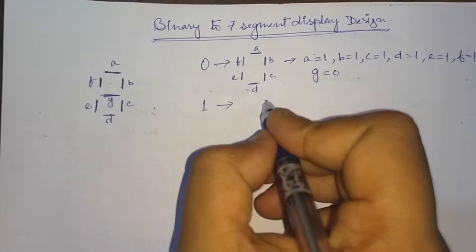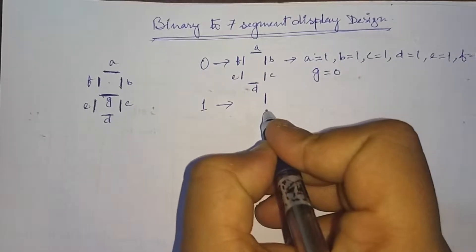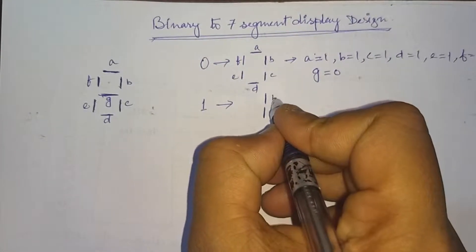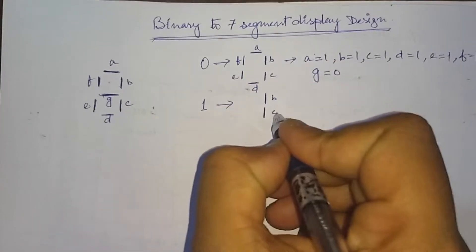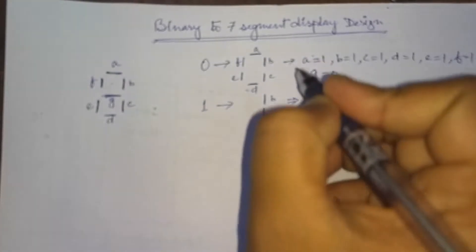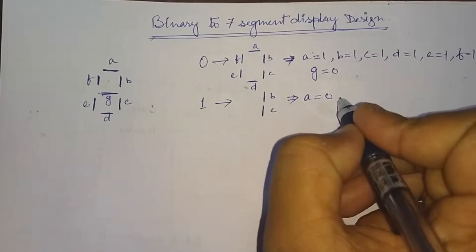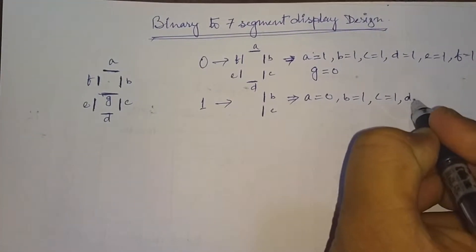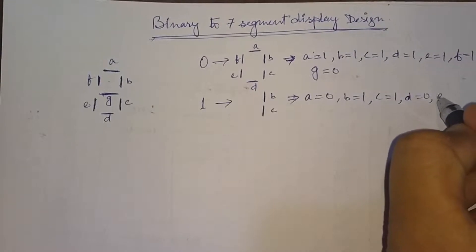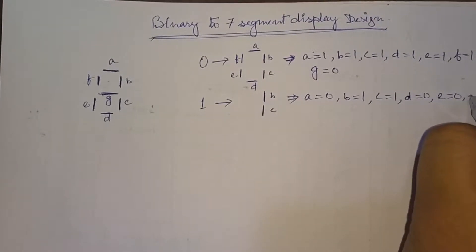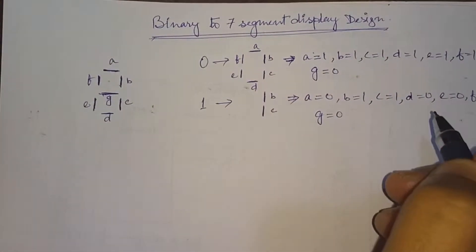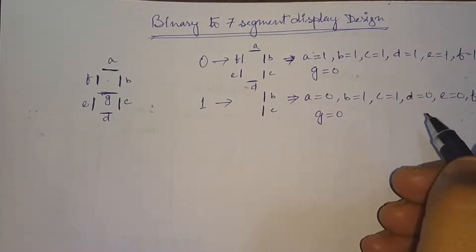And similarly for 1, we have to use only two segments equal to 1, that means B and C. So here we'll have A equal to 0, B equal to 1, C equal to 1, D equal to 0, E equal to 0, F equal to 0, and G equal to 0.